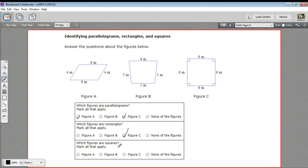And then finally, which figures are squares? Well, C is a square. That's the only square we have there. So that is a little bit of work with parallelograms and rectangles and squares.